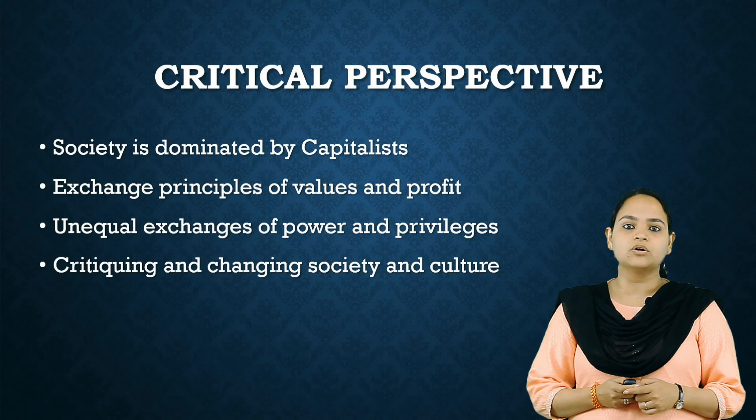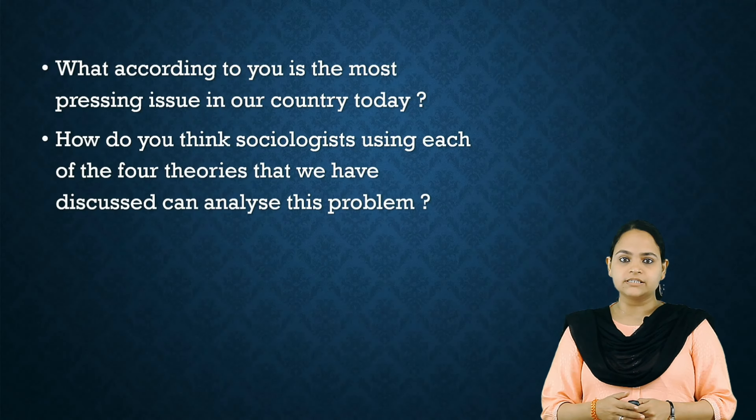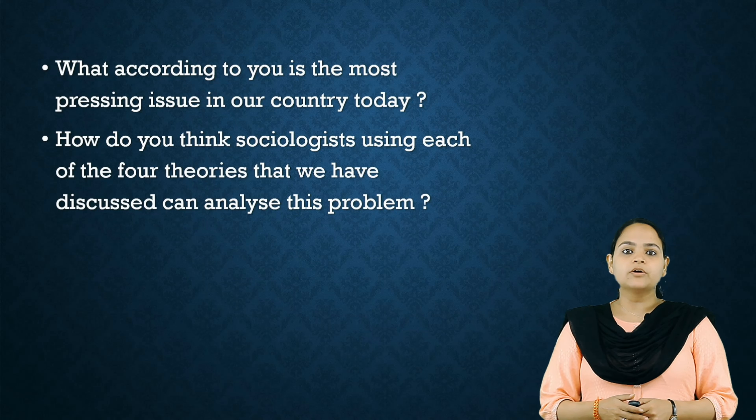I hope by now you have understood the four main theories of sociology. These theories serve as a building block to make a sociologist think and explore social issues. I have a small exercise for you: what, according to you, is the most pressing issue in our country today, and how do you think sociologists using each of the four theories can analyze the problem? If you wish to read more, you can look at the books shared in the previous video, and one additional book I have used is Living Sociology by Clary M. Renzetti and Daniel Kuran. In the next lecture, we shall look at the concept of sociological imagination and various career perspectives in sociology. Thank you.